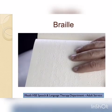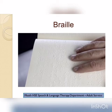Braille is a system that is widely used by blind people to read and write. Letters and numbers are represented by raised dots in different combinations, and these correspond to different letters and numbers.